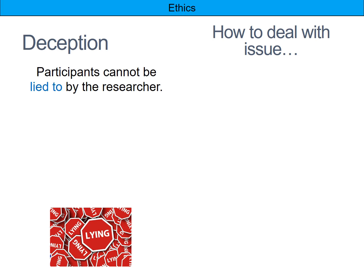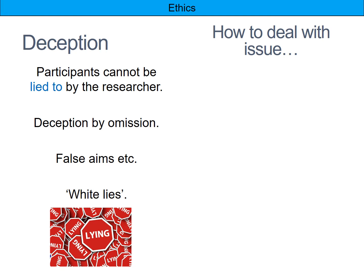Second, deception. Participants cannot be lied to by the researcher — and that includes white lies. Deception by omission means leaving anything out: if you haven't told them what their task is in the brief, that's problematic because it's deceiving them. You're not supposed to give them false aims — don't lie to them in the brief, and definitely don't lie to them in the debrief. That needs to be completely honest, including avoiding white lies.